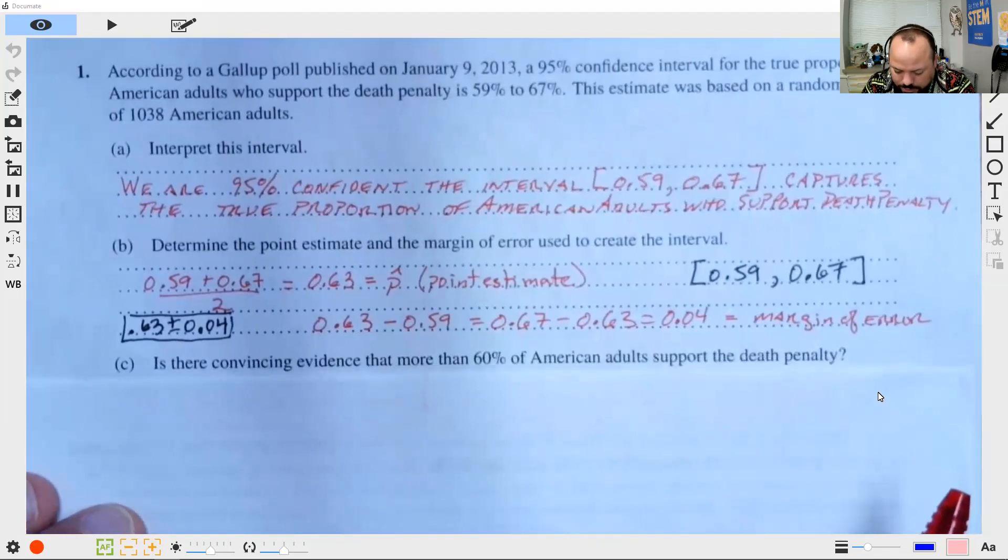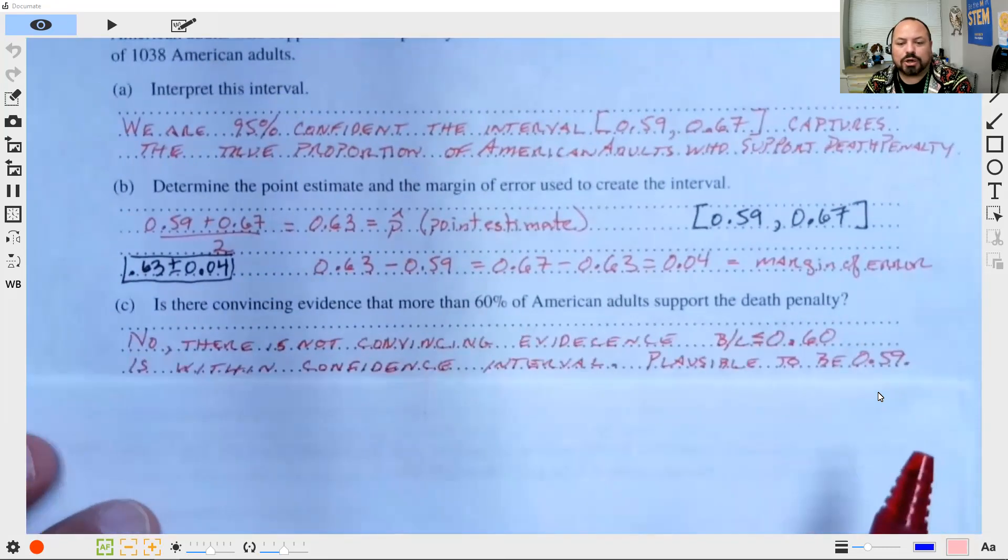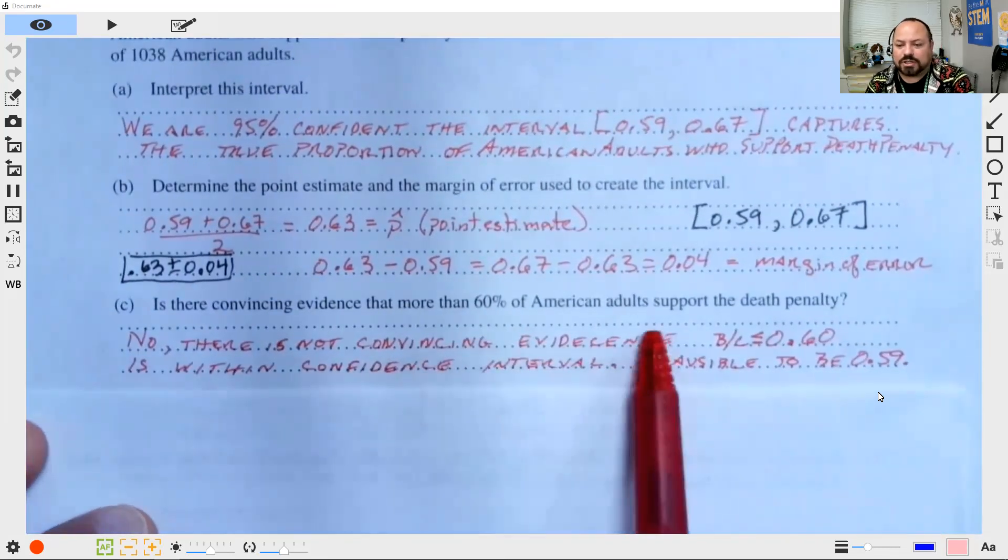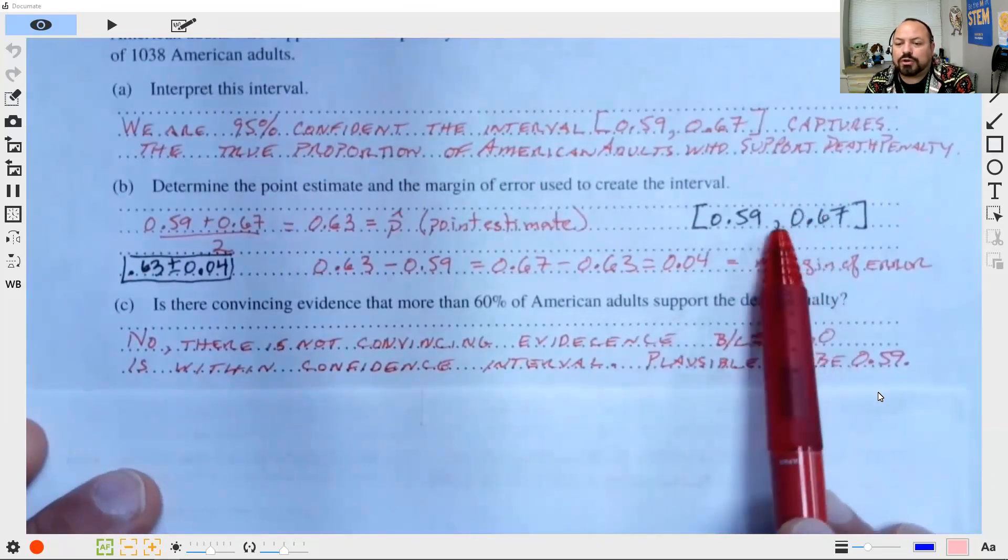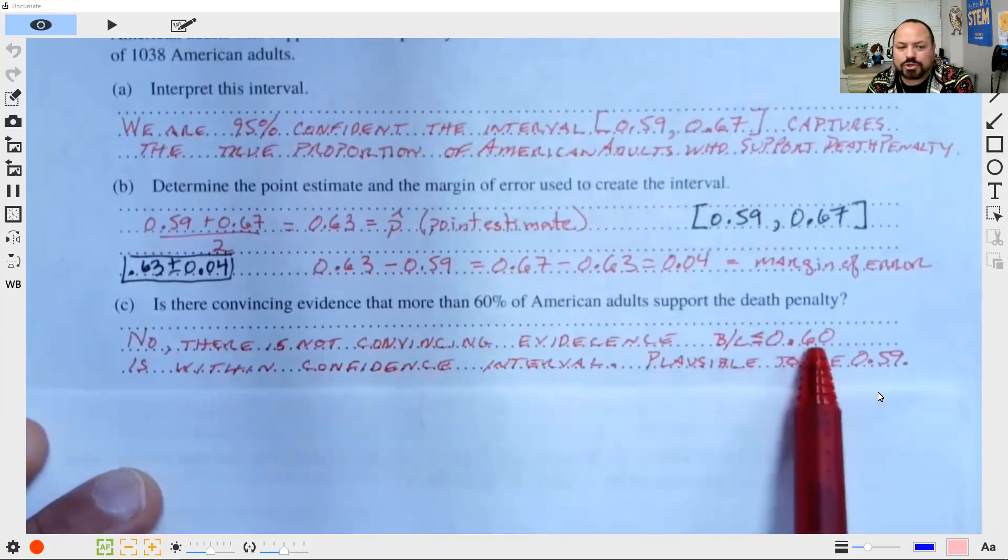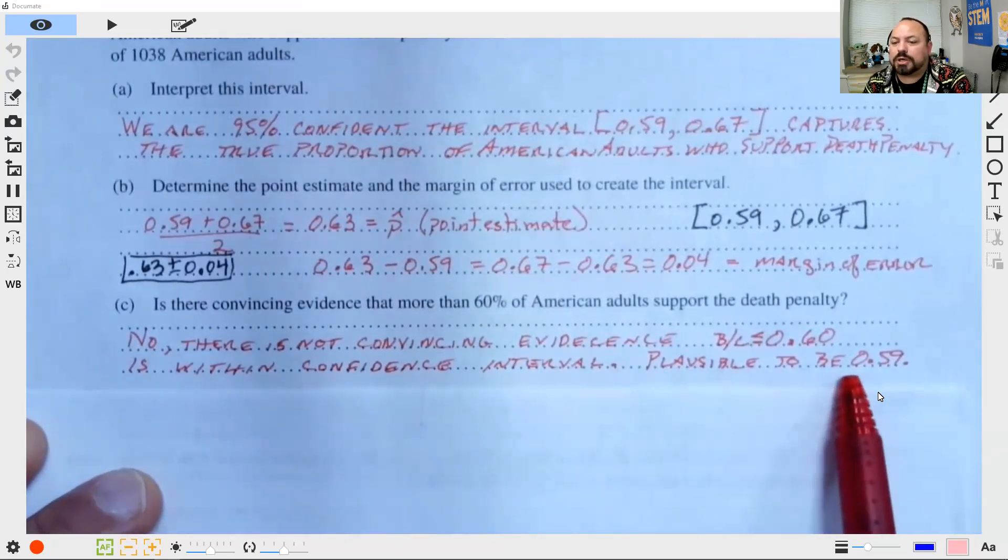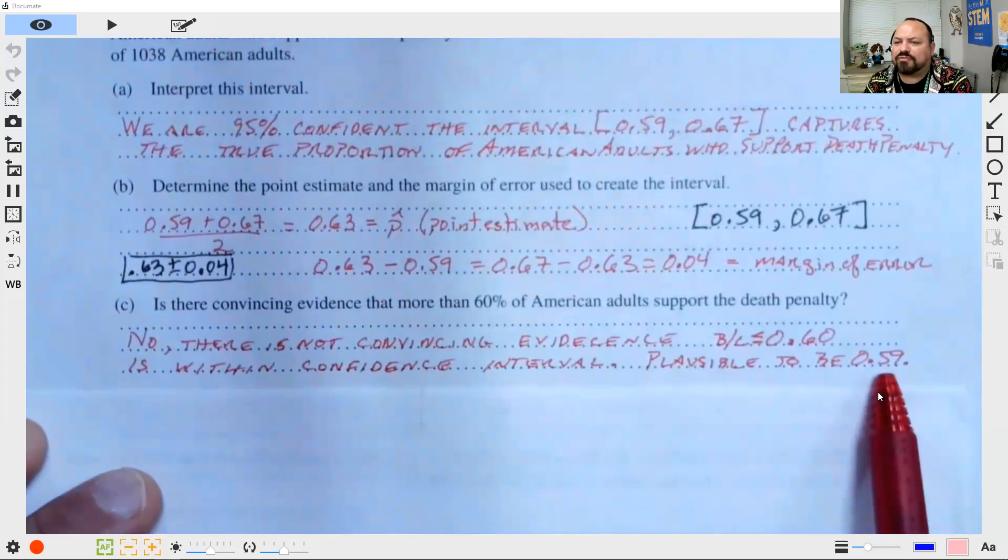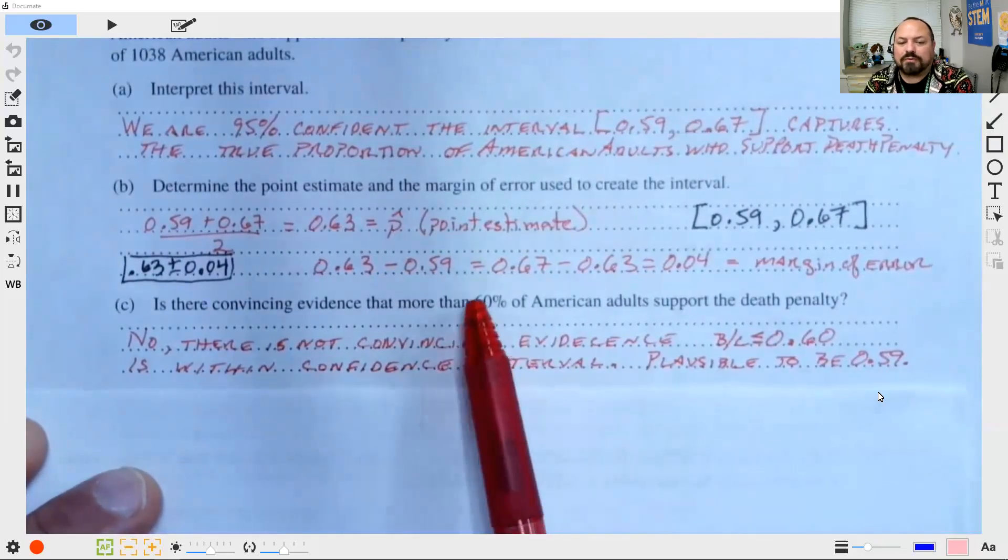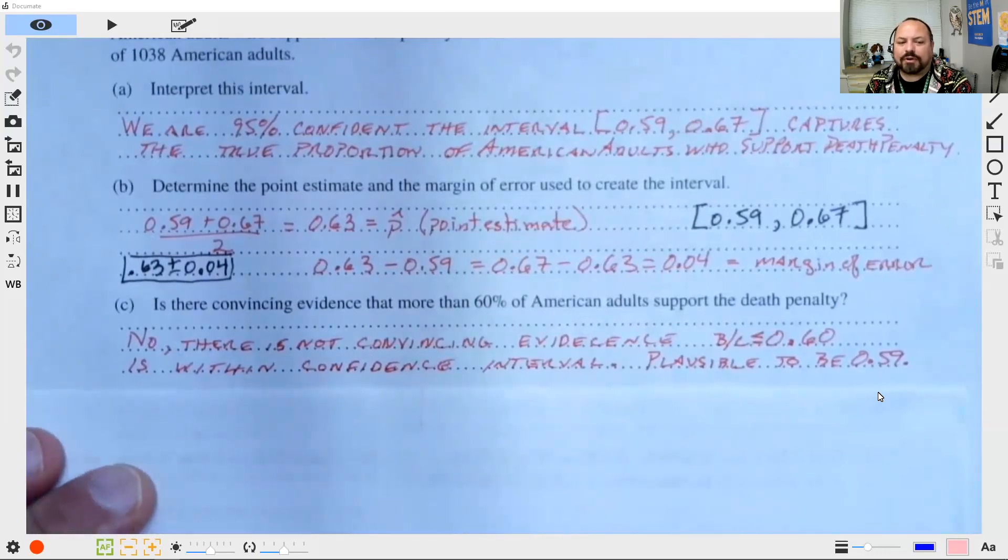And our next piece, do we have convincing evidence that more than 60% of American adults support the death penalty? Well, the answer to this would be no. There is not convincing evidence because our interval includes values less than or equal to 0.60. So less than or equal to 0.60 is within our confidence interval. Therefore, it's plausible to be 0.59 or 0.595, 0.598, all of those being values less than 60%. So I cannot say I have convincing evidence.